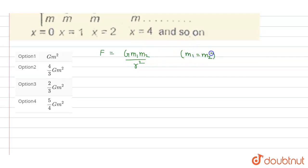So it will reduce to F equals G m squared divided by r squared.